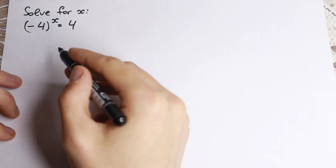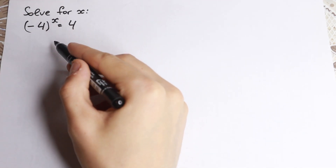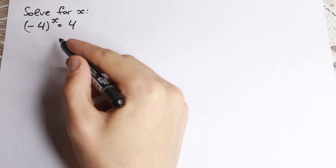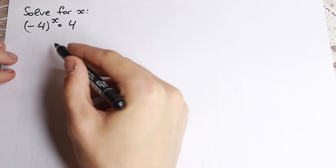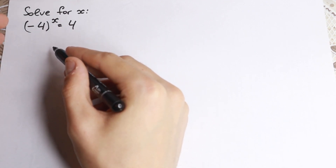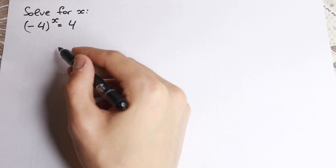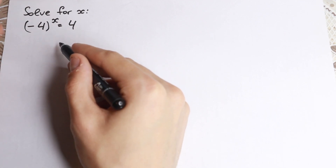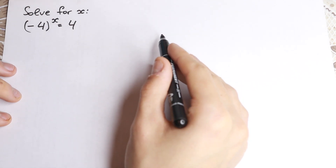No huge numbers, no cubes — we have only x. This looks like an exponential equation. We have minus 4, which is not a huge number, but on the first look this equation is kind of weird, because we have minus 4 to the x equal to 4: a negative number raised to some power, equal to positive four. So it looks like there's no solution, but let's try to figure out what about the solution.